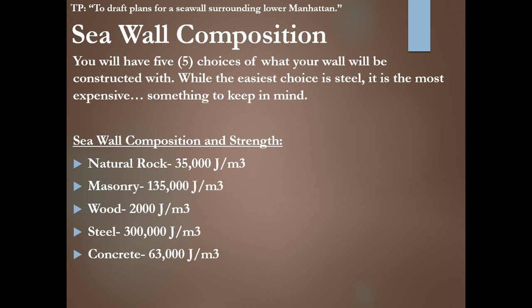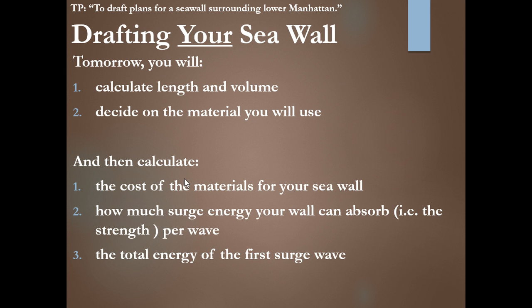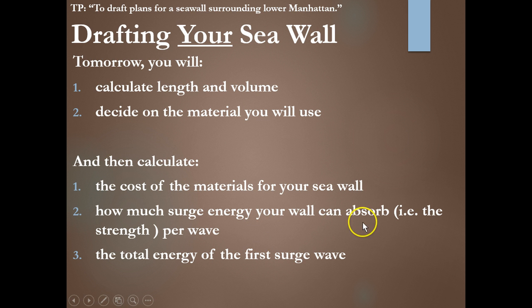And composition — you'll have five choices: natural rock, masonry, wood, steel, and concrete, each with a different strength. The strength has been calculated for you in joules per cubic meter. Joules is energy, and we're looking at it per volume. Tomorrow you will be calculating the length and volume of your seawall, deciding what material to use, then calculating the cost of the materials, how much surge energy your wall will absorb, and the total energy of the first surge wave that comes in.